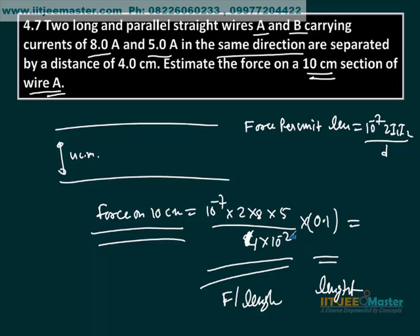10 to the power minus 7 divide by 10 to the power minus 2, 10 to the power minus 5 hoga aur 0.1 se multiply kerengi to 10 to the power minus 6 hoga. 4 se cut kerengi yaha 2, 2 into 2 is 4, 4 into 5, 20.